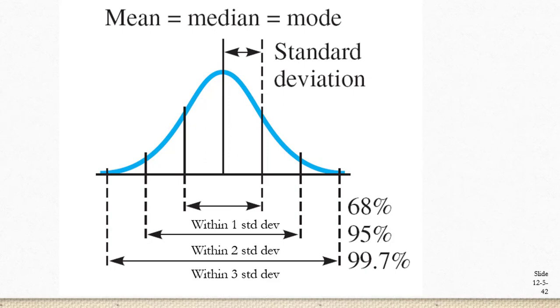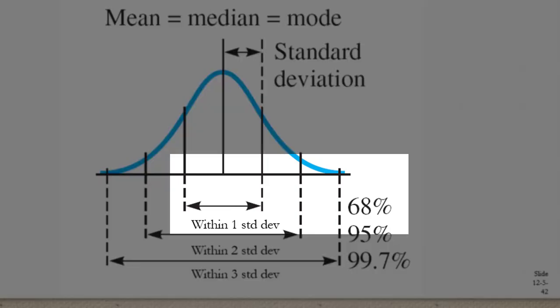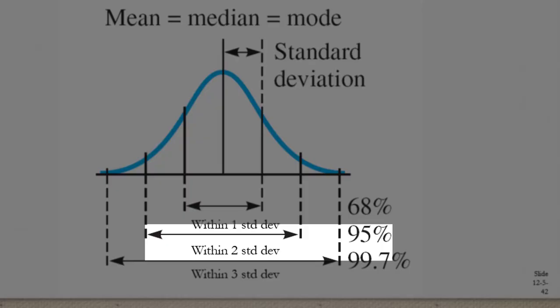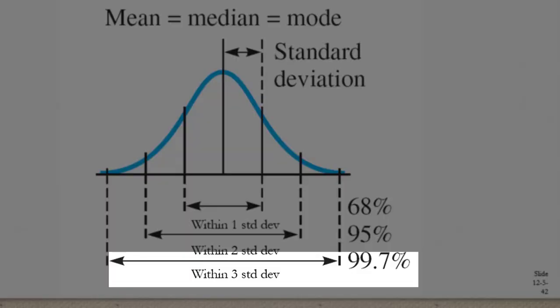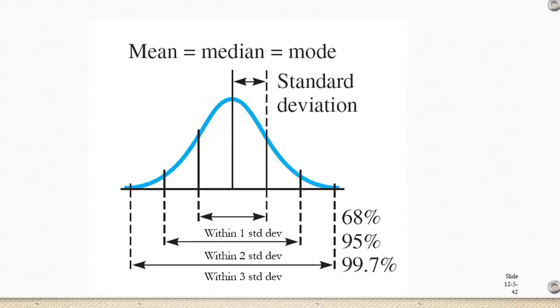It's also true that 68% of all the data will lie within one standard deviation of the mean, 95% of the data will lie within two standard deviations of the mean, and 99.7% of the data will lie within three standard deviations of the mean.